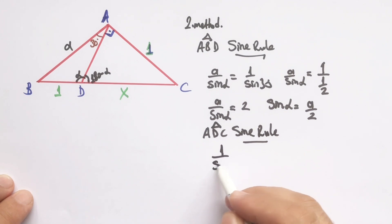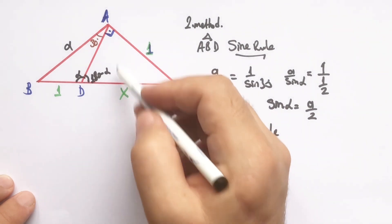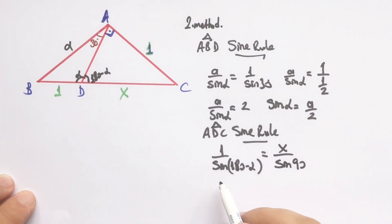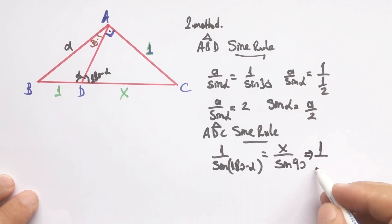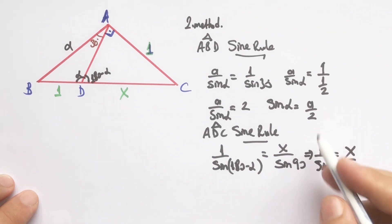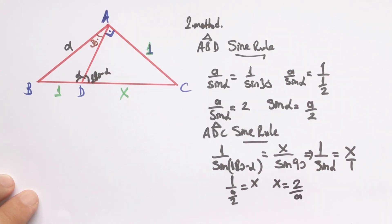Now let's apply the sine theorem in triangle ADC: 1 over sin(180 − α) equals x over sin 90°. We know that sin(180 − α) equals sin α, and sin 90° = 1. Substituting sin α = a/2, we get x = 2 over a, therefore a = 2 over x.